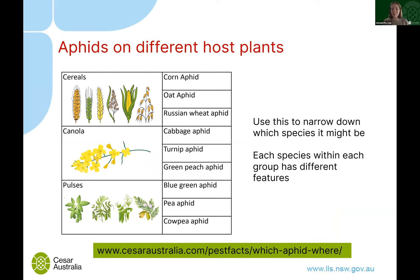When determining which species you're dealing with, the approach is to break it down by host plant. For each crop type, there are usually only about three or four main species to consider. Using the host narrows down the identification significantly, and those three or four species within each group do have quite major physical differences that we can use.